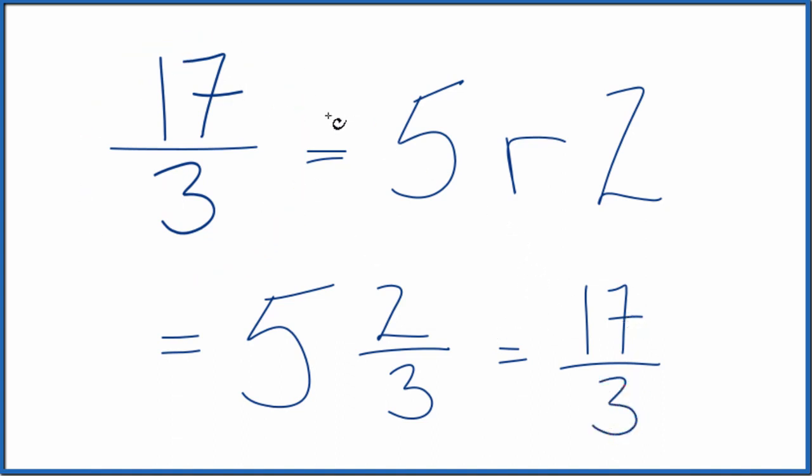So to recap, we divided 17 by 3. We got 5 with a remainder of 2. So we put our whole number here. The remainder, that becomes the numerator. And then we use the original denominator for our denominator in our mixed number.